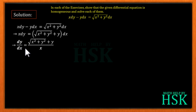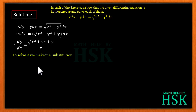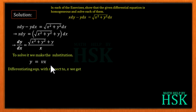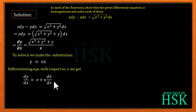Now we are going to solve the differential equation. We have already found dy/dx. To solve a homogeneous differential equation we use the substitution y = vx. Differentiating both sides with respect to x, we get dy/dx = v + x(dv/dx). We place this value of dy/dx into the equation.